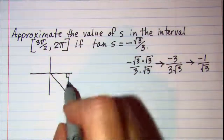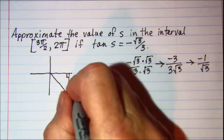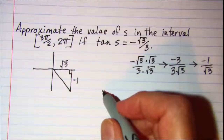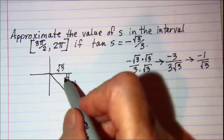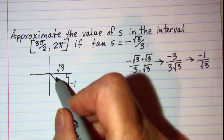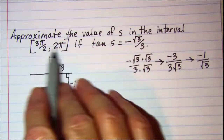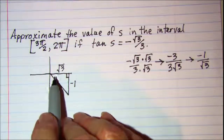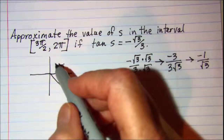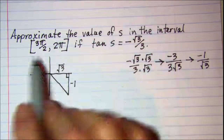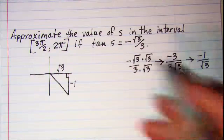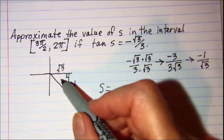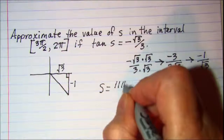So we have negative 1 for the side opposite and root 3 for the side adjacent. We know that our reference angle is 30 degrees. But since I'm in radians because my interval is given in radians, this is pi over 6. So the answer in this interval is s equals 11 pi over 6.